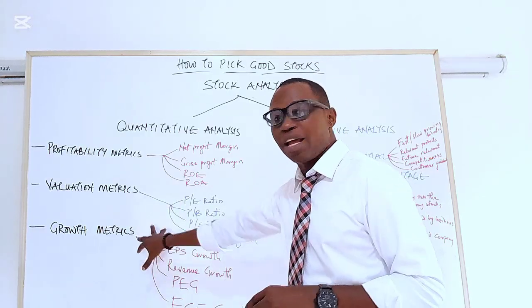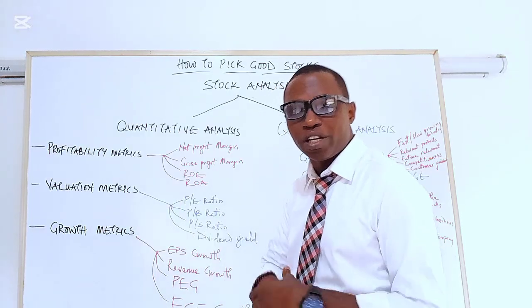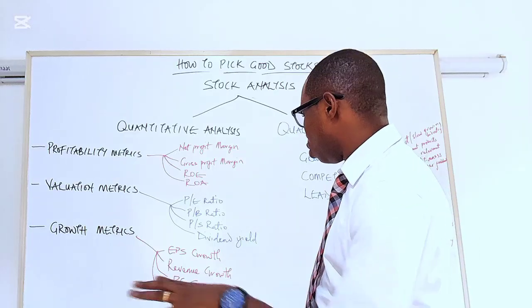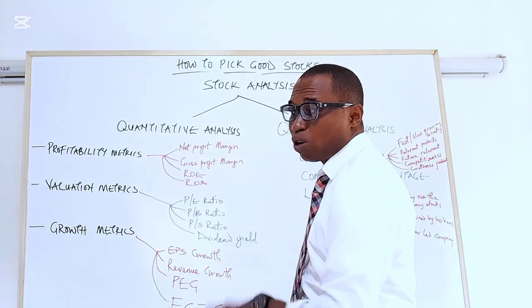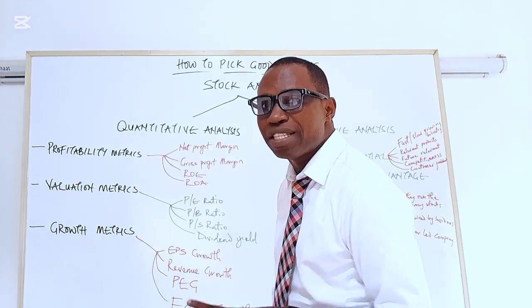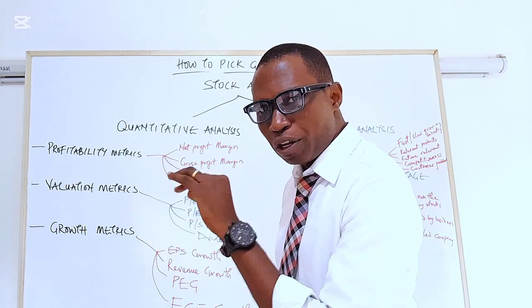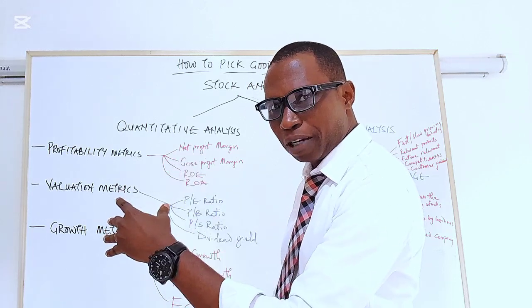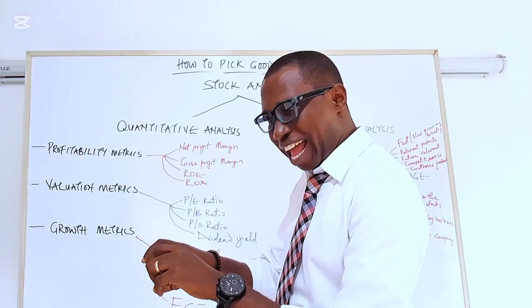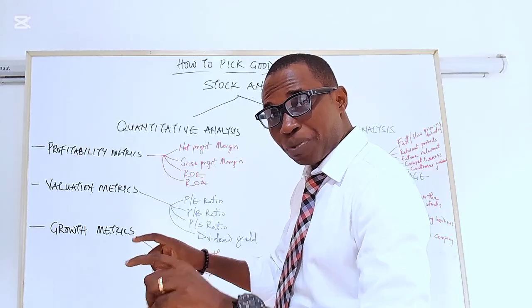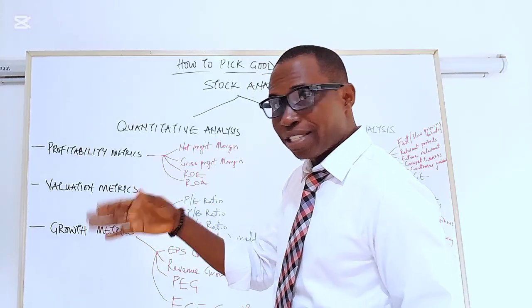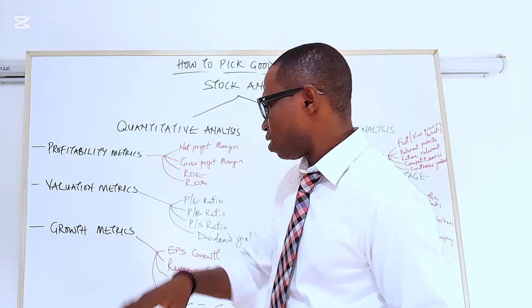That covers valuation metrics. The last category is growth metrics. Number one, look at EPS growth — earnings per share growth. It is usually stated at the end of every income statement, where you can also see the percentage growth.